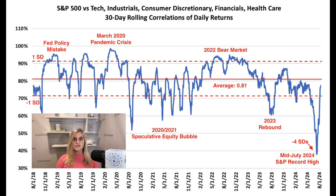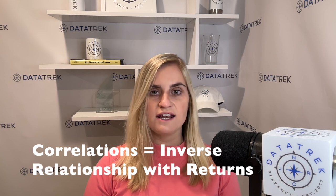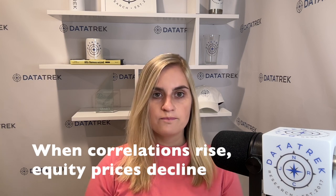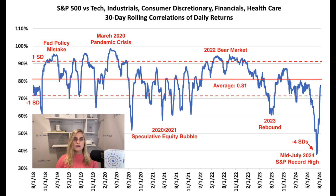You can see towards the left side of the chart where we marked that sector correlations were above 0.9 at the end of 2018 because of Chair Powell's policy mistake, again in March 2020 at the peak of the pandemic crisis, and again towards the right of the chart in 2022 amid rapidly rising rates. It's important to remember that correlations have an inverse relationship with performance, meaning that when they go up, stock prices go down. That was obviously the case in late 2018 until Chair Powell capitulated in early 2019, also in early 2020 at the onset of the public health crisis, and again in 2022 as the Fed hiked rates to fight inflation.